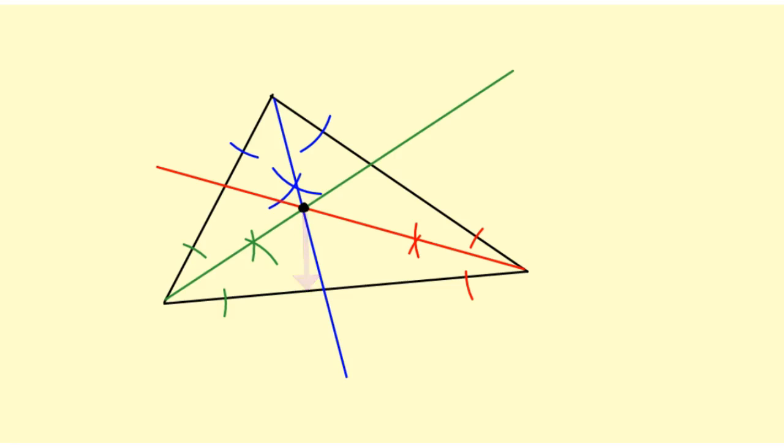To construct a perpendicular segment from the in-center to one of the sides, I need to take my compass and mark off two arcs. Put it on each of those points of intersection, and I'm going to draw an arc below from both of those points of intersection.